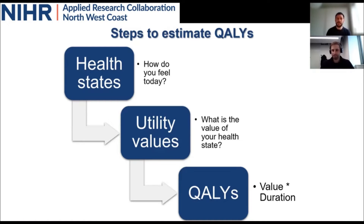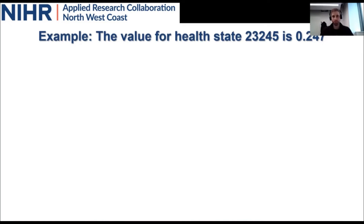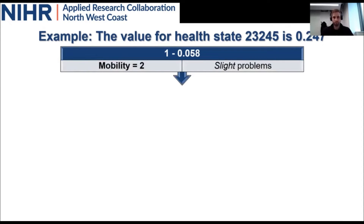What happens is that patients respond to the questionnaire, giving a particular health state. For example, we can see in this slide a health state defined as 2, 3, 2, 4, 5. The first number — two — means a particular patient scored 2 for mobility, meaning they have slight problems with mobility. We need to put a value on that health state. In this case, the value is 0.058, which is a utility decrement attached to a mobility score of 2. So we start from full health, equal to 1, and subtract 0.058 — approximately a 6% loss on full health.